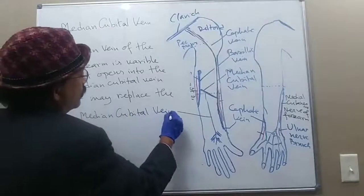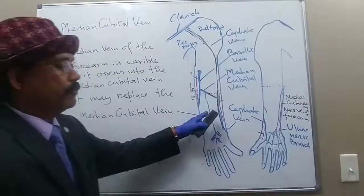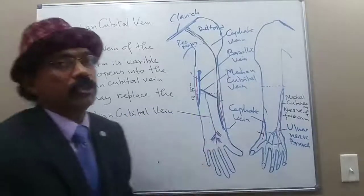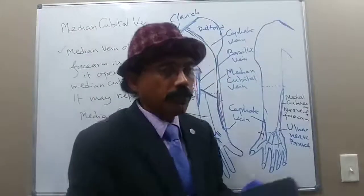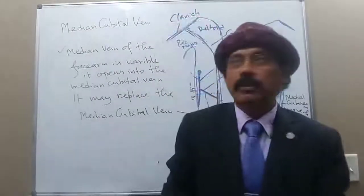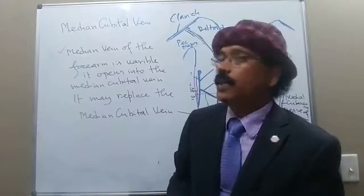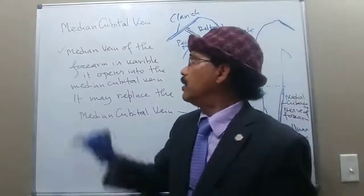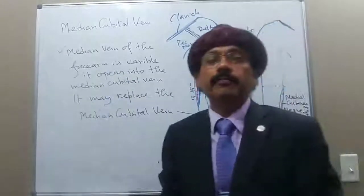If the median vein of the forearm is present, it may also be used for venipuncture. That covers the anatomy of the median cubital vein and the median vein of the forearm.